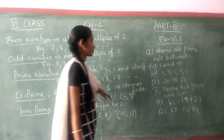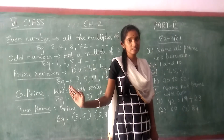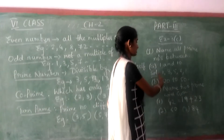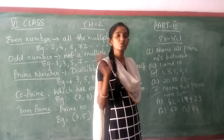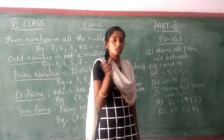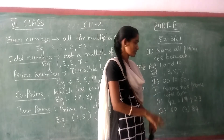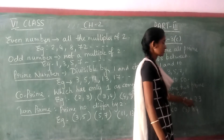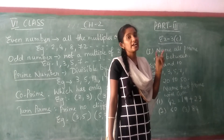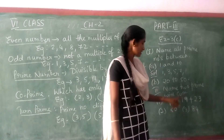So based on these definitions, I have done a few sums for you. The first question: name all the prime numbers between 1 and 10. From 1 till 10, the prime numbers are 1, 3, 5, 7. The second question: name 2 prime numbers with a sum of 40. For example, 17 is a prime number and 23 is a prime number — if I add these 2 numbers, I get the answer as 40. Any 2 prime numbers that add up to 40 will work.